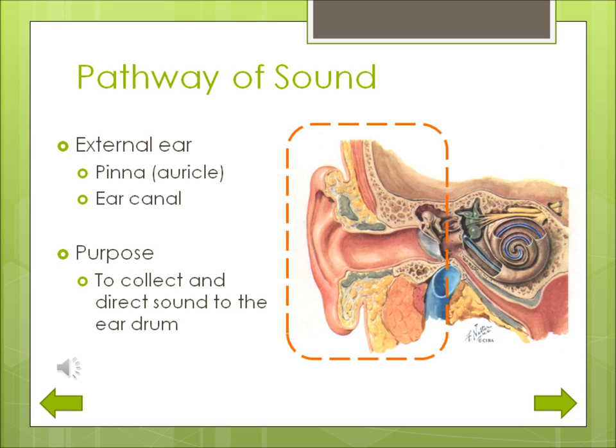The ear is divided into three main sections. The external ear includes the pinna, also called the auricle, and the ear canal. The job of the external ear is to collect sound waves from the air and direct them toward the eardrum.